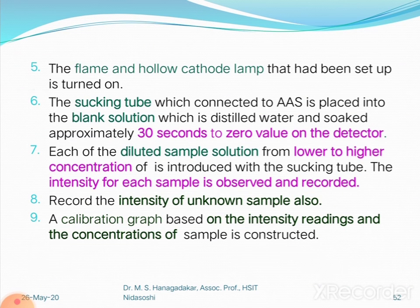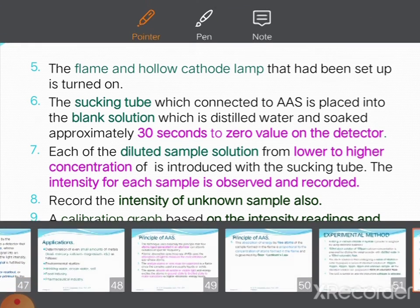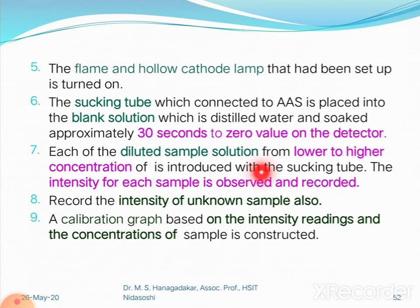Step five: the flame and hollow cathode lamps are started and confirmed to be operating. Step six: the sucking tube connected to the AAS is placed into the blank solution — distilled water — and soaked for approximately 30 seconds to set the zero value on the detector. Step seven: each diluted sample solution from lower to higher concentration is introduced and drawn in using the nebulizer, and for every sample the intensity is observed and recorded in a tabular column.